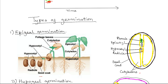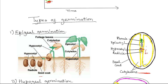The hypocotyl is the region between the radicle and the cotyledon that connects the embryo to the cotyledon. This part elongates rapidly, carrying the cotyledon, the epicotyl, and the plumule out of the soil. The hypocotyl forms a hook that pushes through the soil, protecting the plumule and the cotyledon.